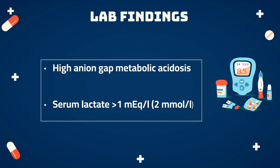Let's see how lactic acidosis can be diagnosed by lab findings. We need to calculate the anion gap, as a high anion gap is very common in acidosis. We also need to measure the serum lactate level, since lactate concentration is elevated. If serum lactate is more than 1 milliequivalent per liter, the person can be said to have lactic acidosis.